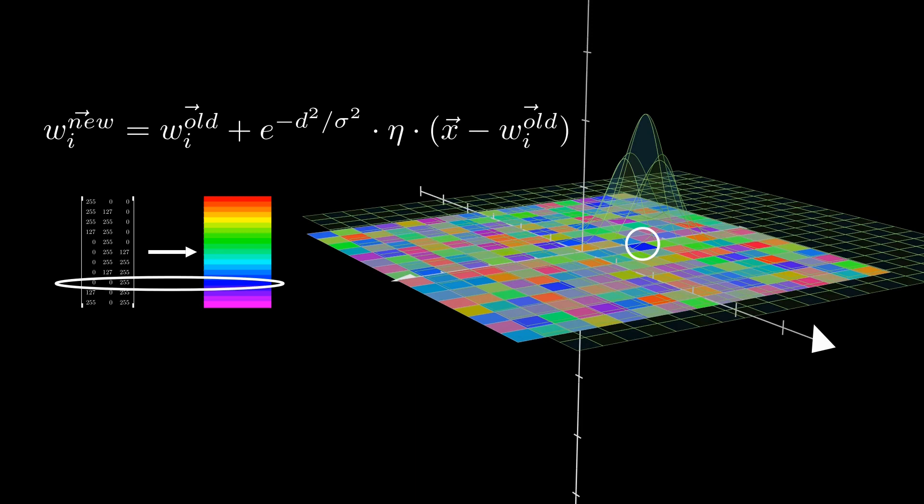During this learning process, the amount of learning each node does follows a Gaussian function, where nodes closer to the winning node learn more than those farther away. In the equation, D is the distance of a node from the winning node. Sigma controls the width of the Gaussian function. And eta is the learning rate, which has a value between 0 and 1.